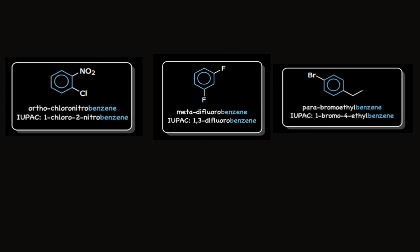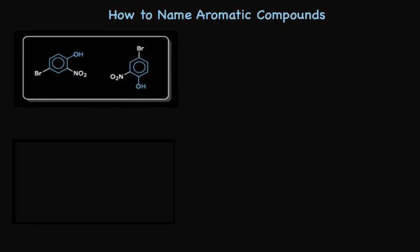Let's look at examples with three substituents, where we must use systematic nomenclature. When you have more than two substituents, you can't use ortho, meta, and para — you have to use numbers. First, check if the structure is one of the special structures you've memorized. Looking at the blue atoms, this is a phenol, so we name it as a phenol. We number going in the direction that reaches a substituent soonest, and list substituents alphabetically — bromo comes before nitro — giving us 4-bromo-2-nitrophenol.